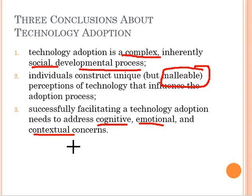At its heart, what the diffusion and adoption process — and what these theories — are trying to help us do is to have people buy into the idea of using these innovations as quickly as possible. Because the longer an innovation process draws out, the less likely people are to embrace the change, and the less likely that change is going to yield positive results within an organization.